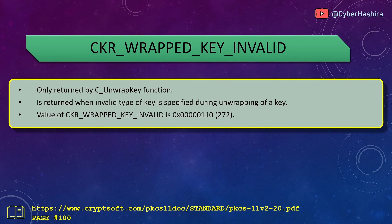C_UnwrapKey is a PKCS11 function that unwraps a wrapped key. During an unwrap operation, you need to specify which type of key you are trying to unwrap. If the specified key type does not match the actual key, CKR_WRAPPED_KEY_INVALID is returned — for example, unwrapping an RSA private key as an ECDSA private key. Its value is 0x110 and is on page 100.